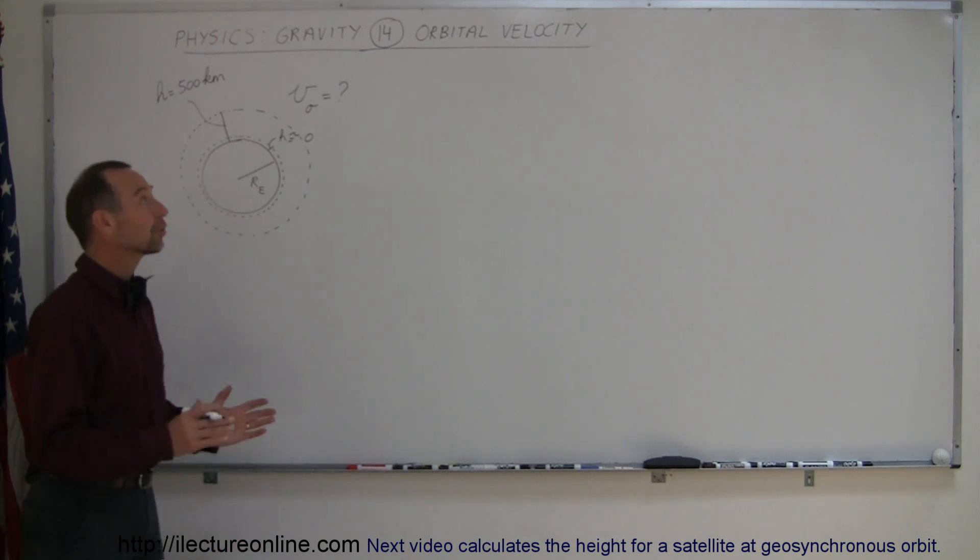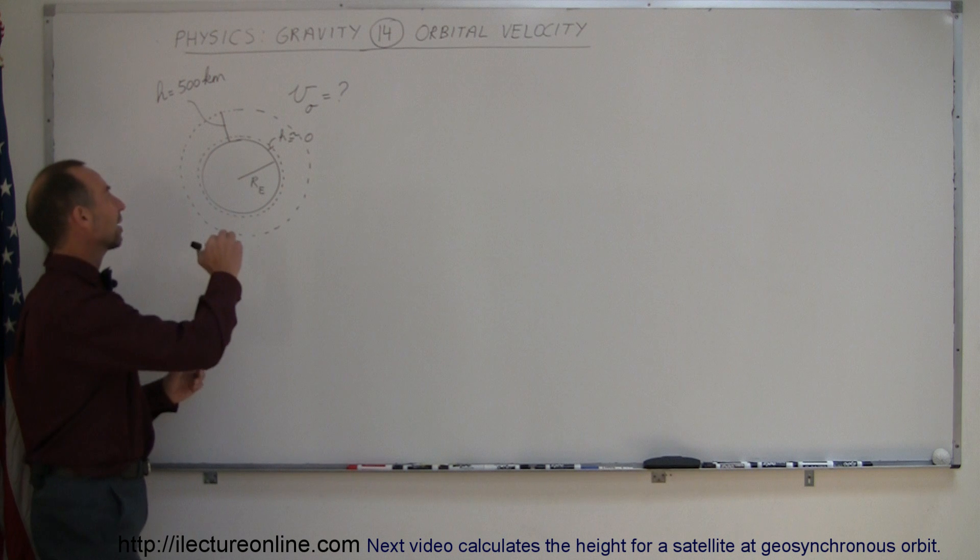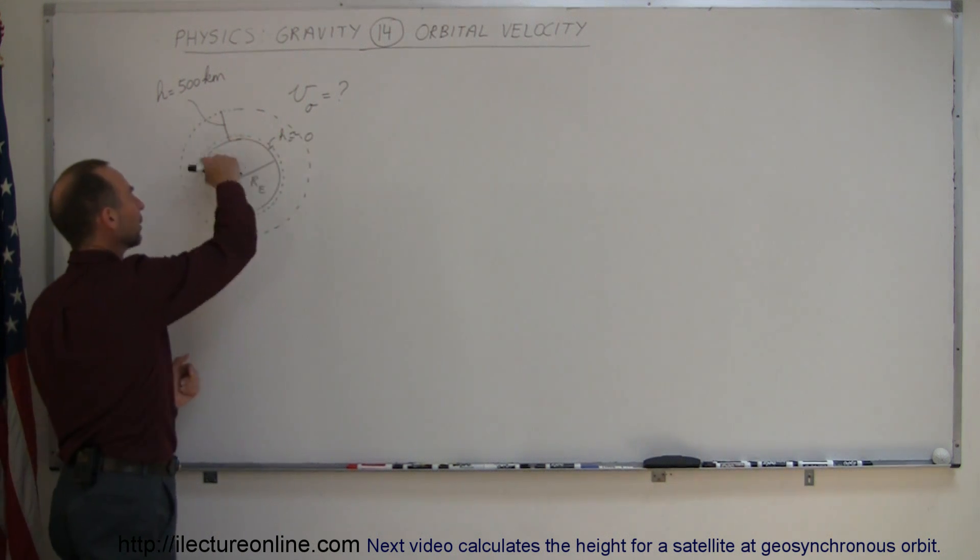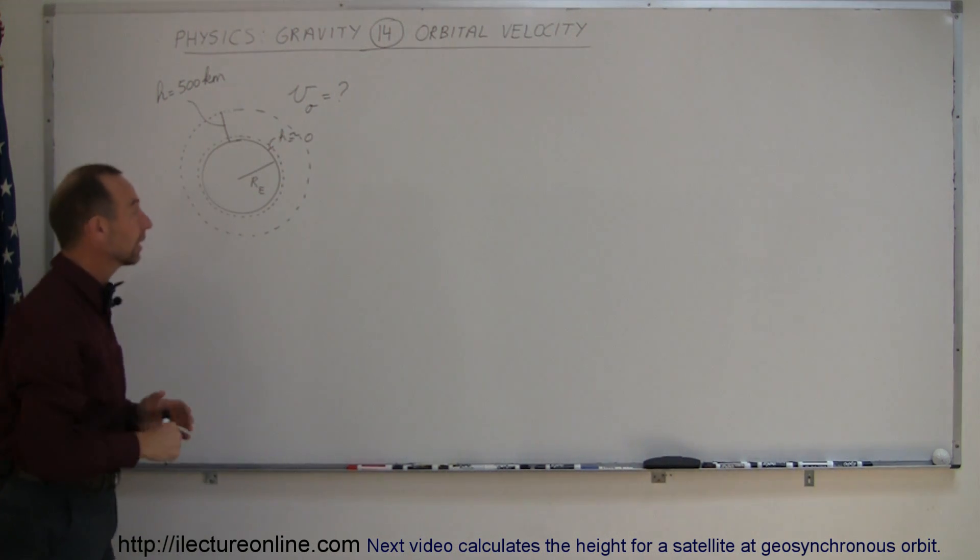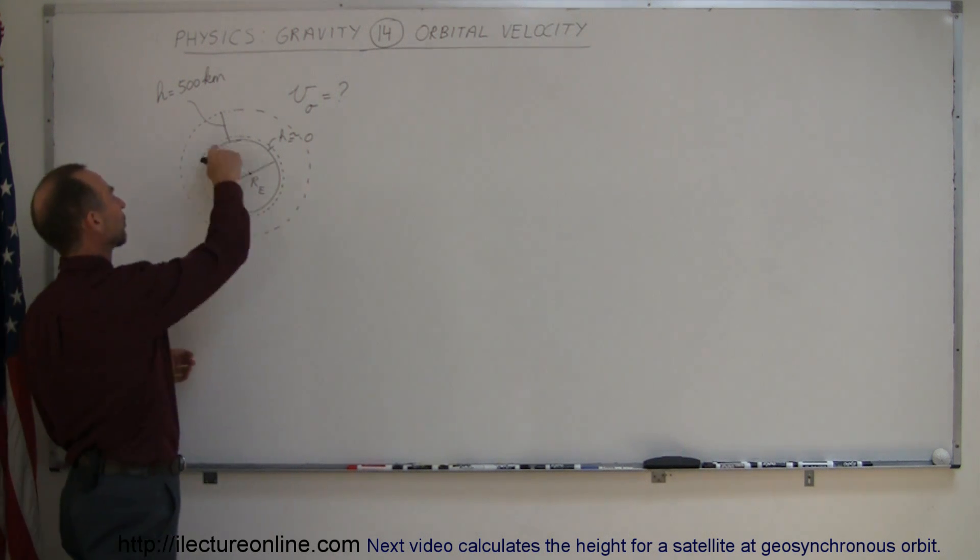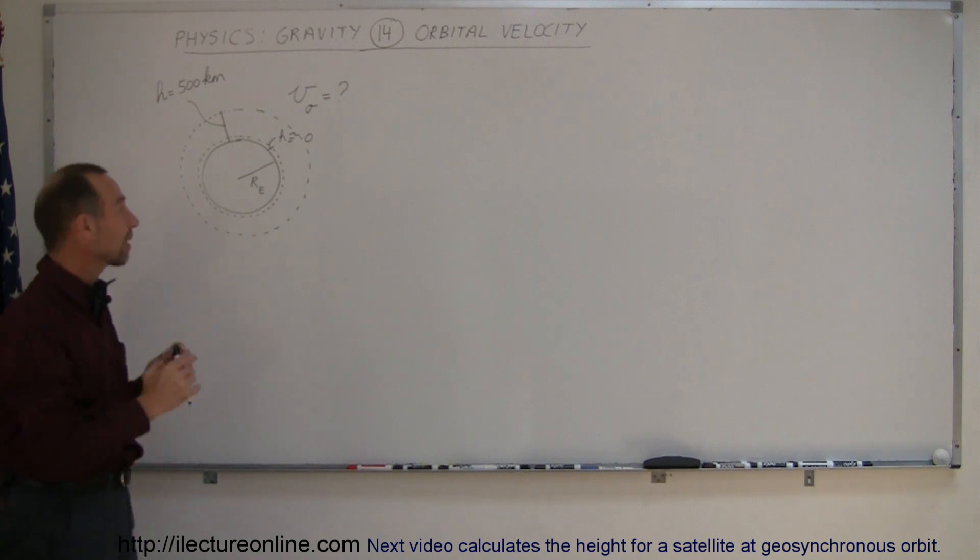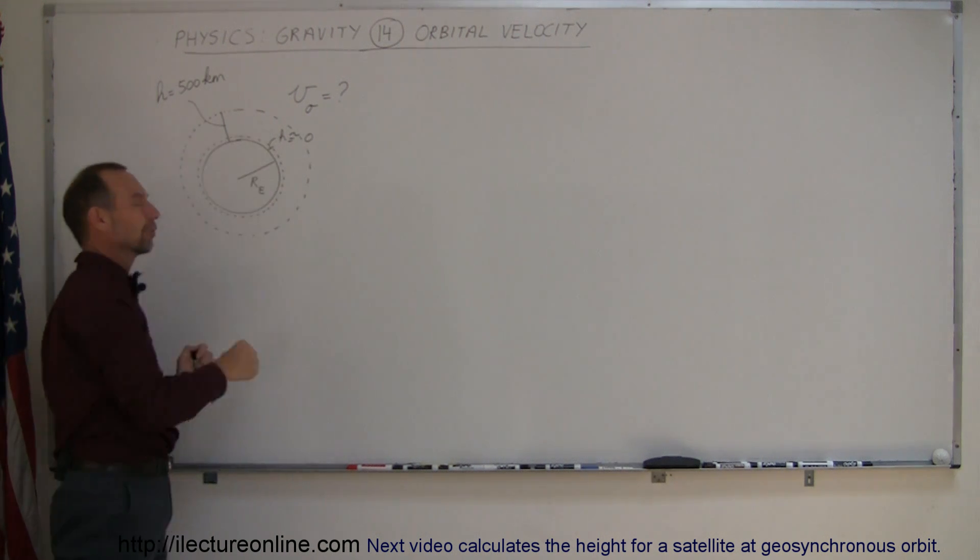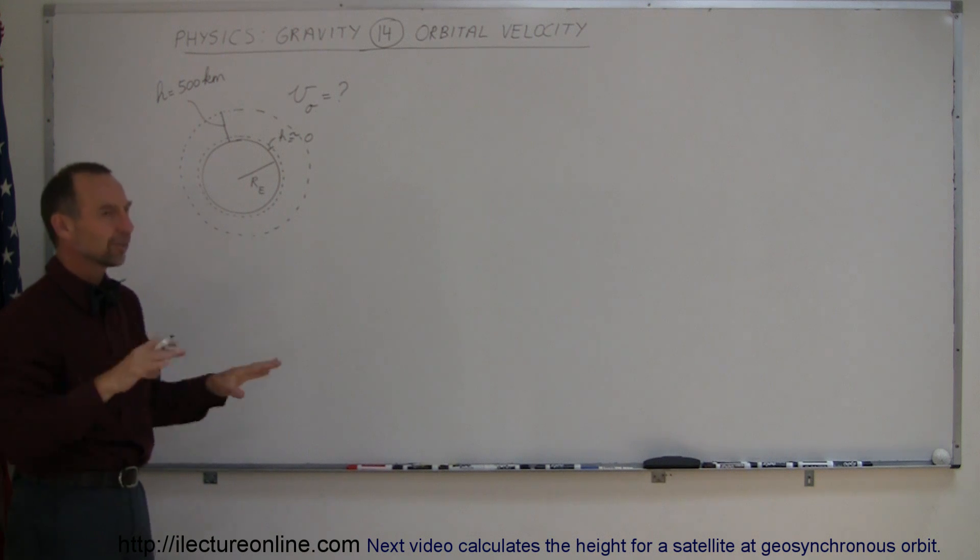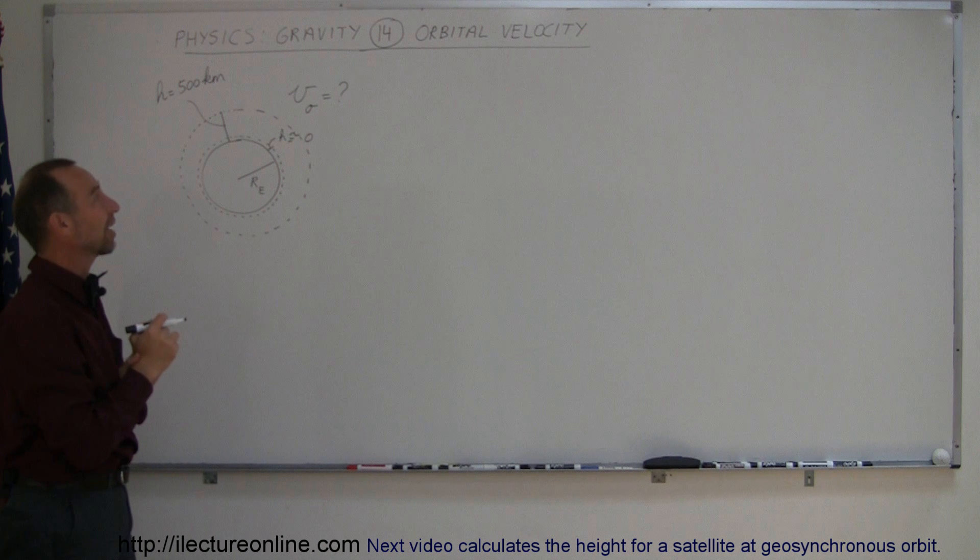Our next topic on gravity is going to be orbital velocity - the velocity an object has to have in order to be in orbit around another planet or moon or anything like that. Let's take the Earth for example. What will it take for a satellite to travel around the Earth? Let's first assume that the satellite is going to travel very closely to the surface of the Earth, just a few feet above the surface, avoiding all buildings and trees and mountains. Just as a theoretical example.